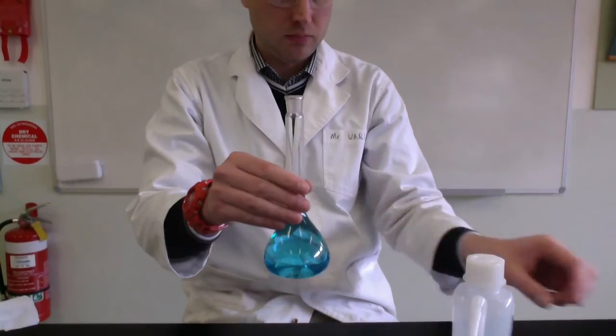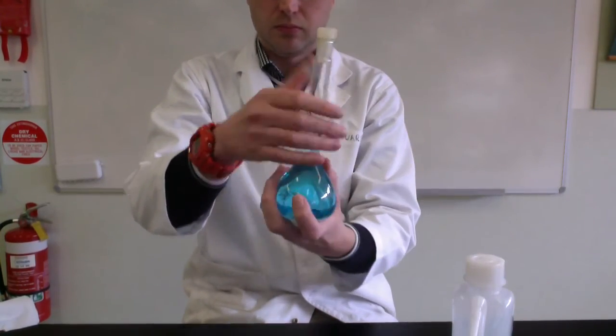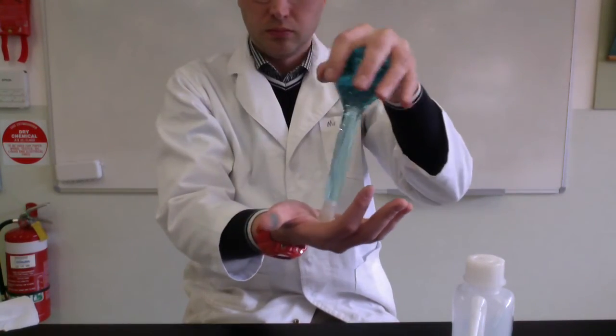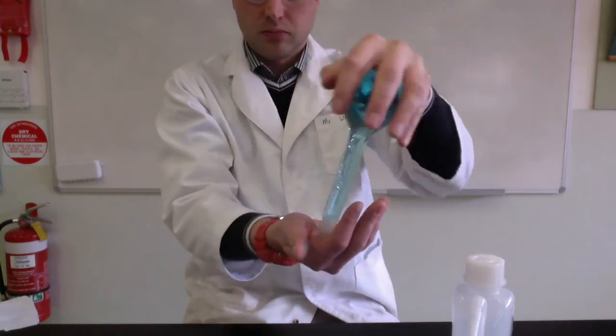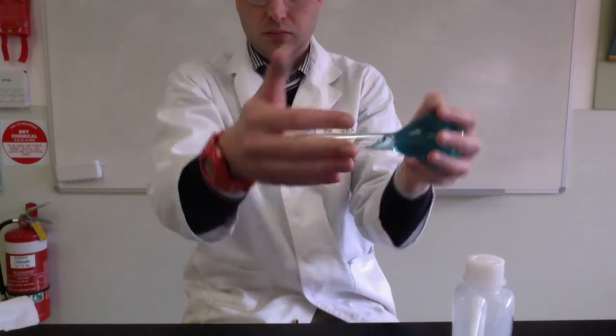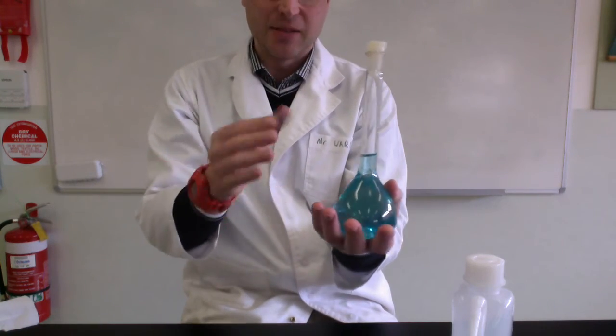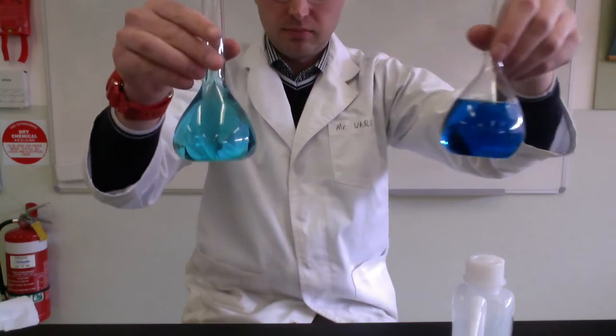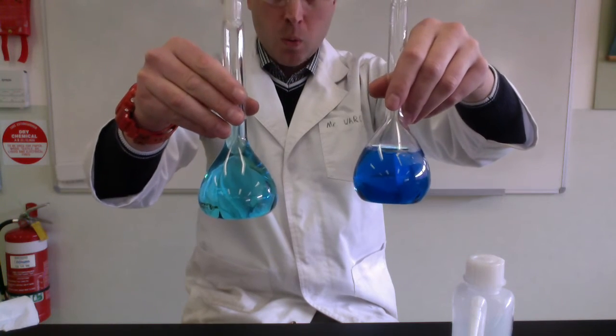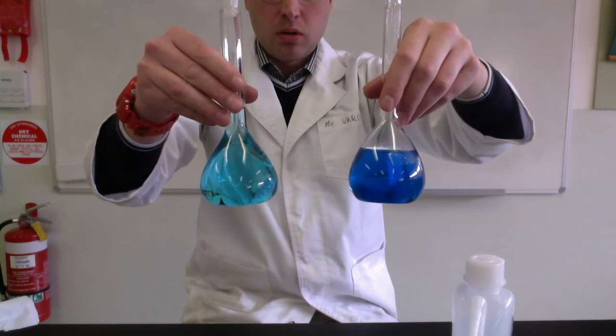So now again, I'm going to stopper. I'm going to invert and homogenise to make sure the mixture is completely mixed so we don't have a concentration gradient through the bottle. And there we have it. That's my diluted sample. You can compare it to the original and see the difference in colour.